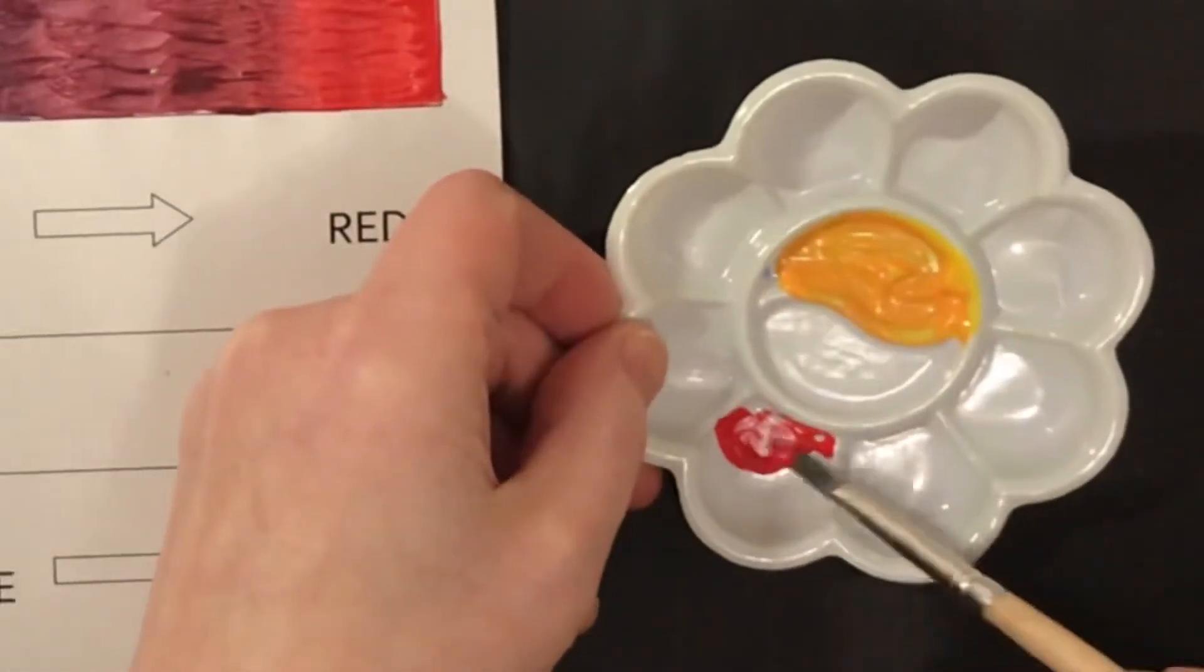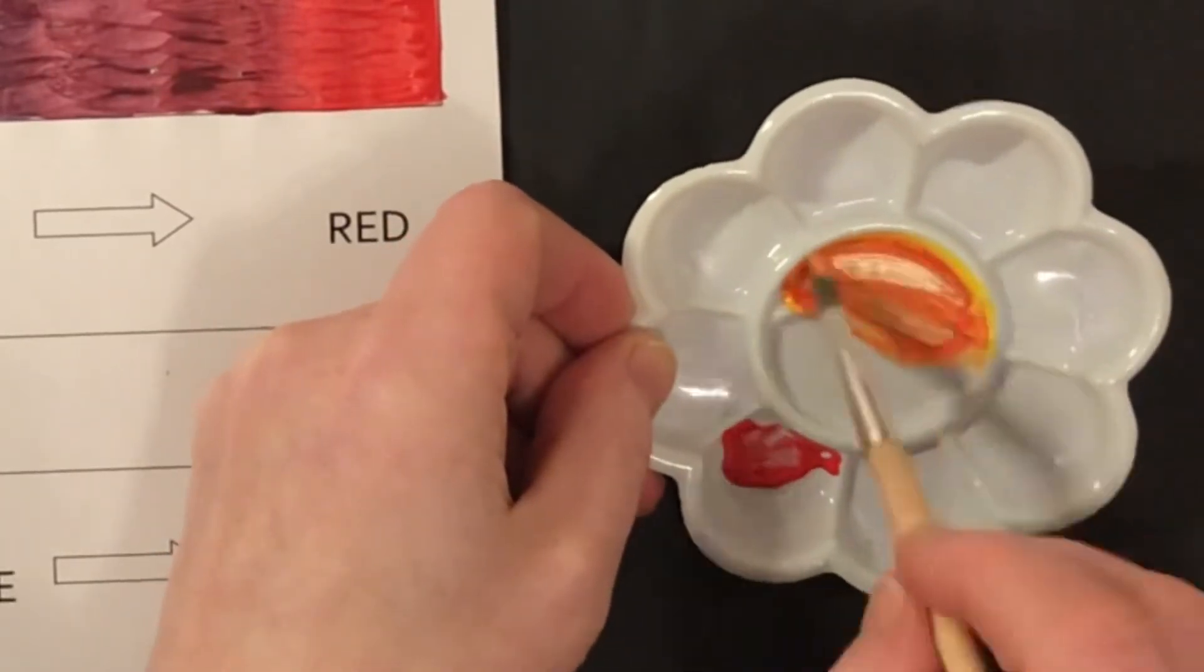Gradually add more red into it and you'll start to get an orange.